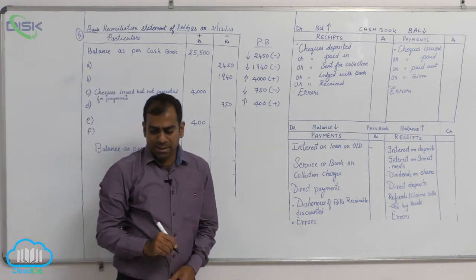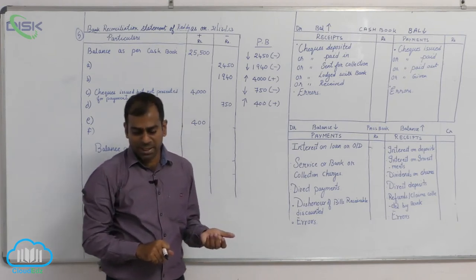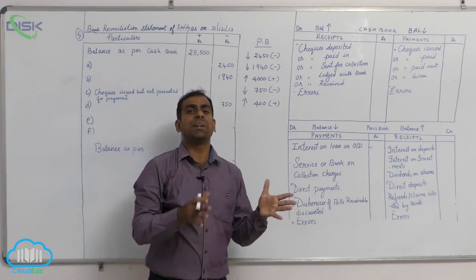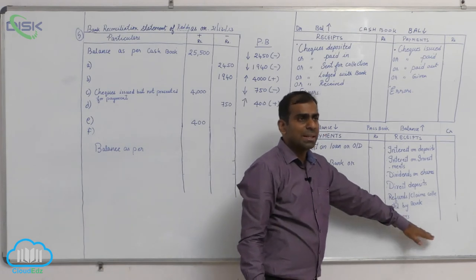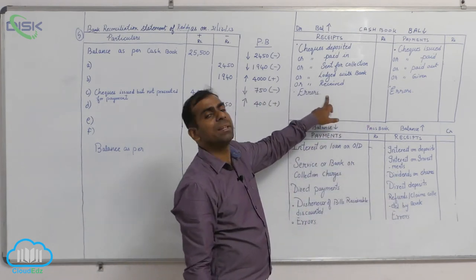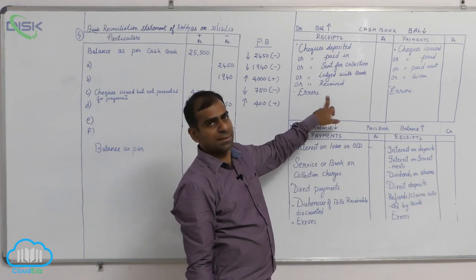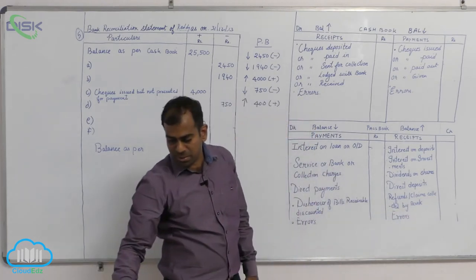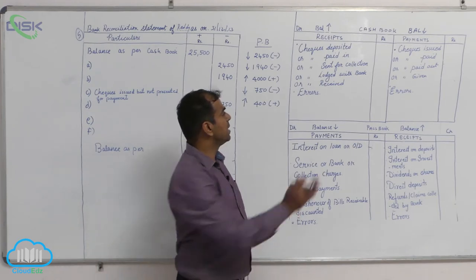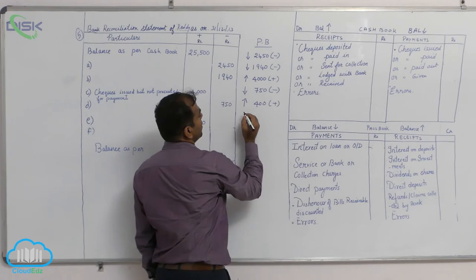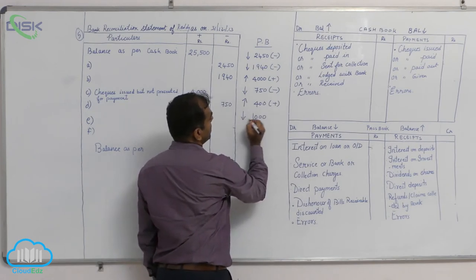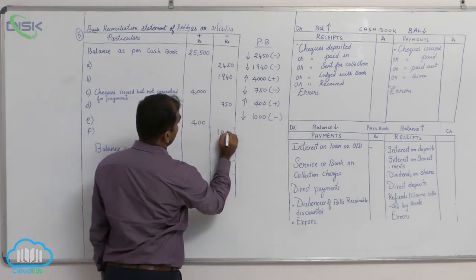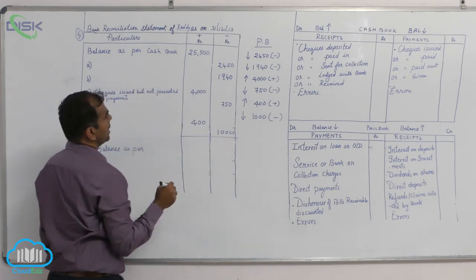Now the last transaction, that is F. It states uncredited check. The meaning of uncredited check means you have deposited a check in the bank, but bank people did not still enter it into the receipt side of your passbook. That means an entry is made by you on the debit side of cash book. As a result the entry should come here, but still the bank people did not do so. It's 1000, so you have entered 1000 here. Cash book balance goes up, passbook balance comes down because it is not yet entered. Because it is coming down, you will minus, so enter this 1000 here.